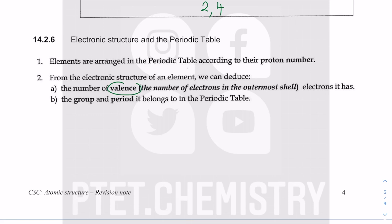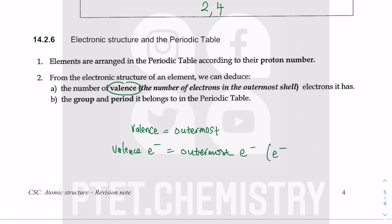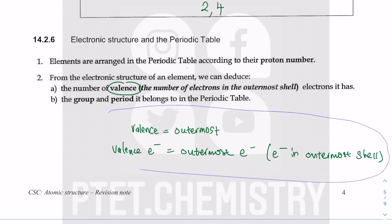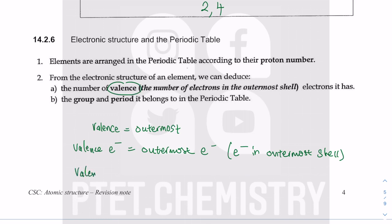The number of valence electrons — V-A-L-E-N-C-E — refers to the same thing as outermost shell electrons. Cambridge likes to use different words: atomic number equals proton number, mass number equals nuclear number, valence equals outermost. Valence electrons are the electrons in the outermost shell, the shell furthest away from the nucleus.